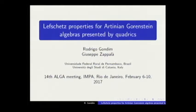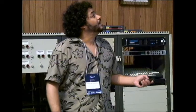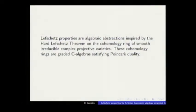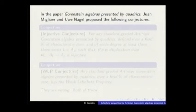The Lefschetz properties are algebraic abstractions inspired by the hard Lefschetz theorem on homology rings of smooth projective varieties. These properties are connected to several different subjects in commutative algebra, algebraic geometry, and combinatorics. I'm going to talk at the border of these three branches of mathematics. The motivation comes from a paper by Migliore and Nagel.